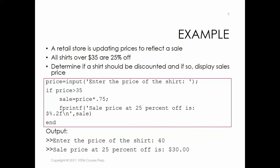This goes back to our shirt problem. We've got a retail store updating their prices because they've got a sale going on — all shirts over $35 are going to be 25% off. We need to figure out if a shirt should be discounted and, if it should be, what the sales price should be. The shirt's either going to be on sale or it's not. If it's on sale, you've got to calculate the new sales price; otherwise, you don't have to do anything. So first, we need to input the price of the shirt. Then we're going to say: if the price is greater than $35 — if this statement is true — we need to calculate the sales price.